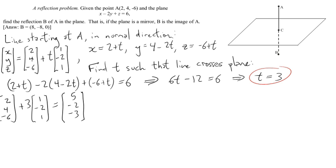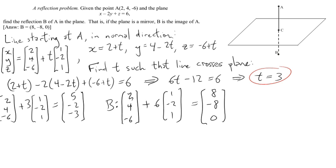So, if we get from A to C by starting at A and adding 3 times the normal vector, we can get to B, the mirror image, by adding 3 more times the normal vector. So here's how we'll find B. We'll start at 2, 4, minus 6, and add 6 times the normal vector. 2 times 3 is 6. So you wind up at the point with coordinates 8, minus 8, 0. That is the reflection of A through the given plane.